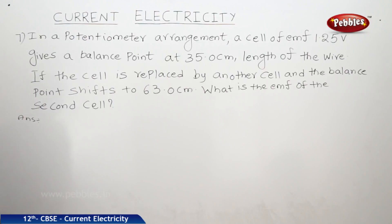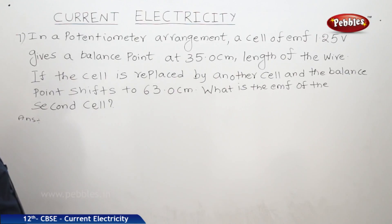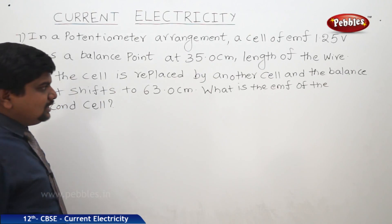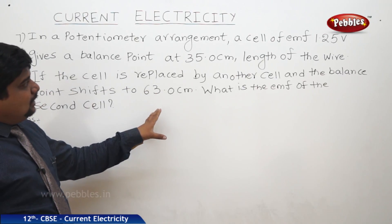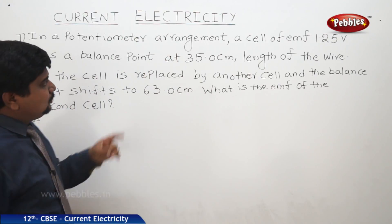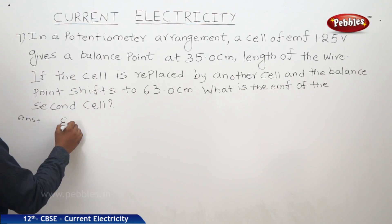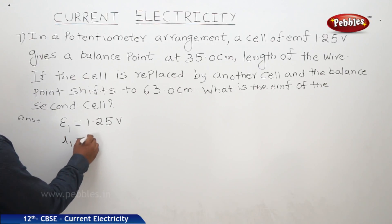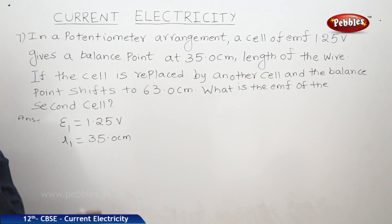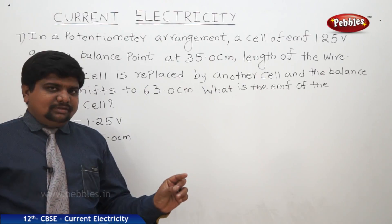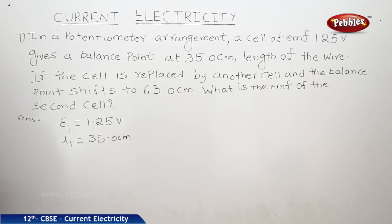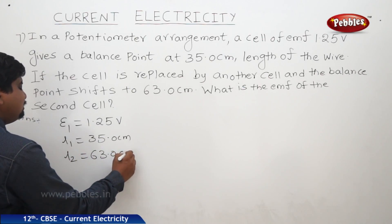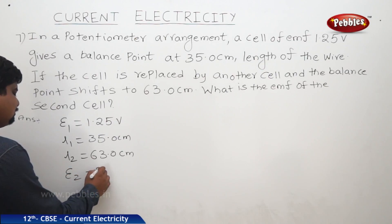Next, a potentiometer problem. A cell of EMF 1.25 volts gives a balance point at 35 centimeters length of the wire; so E1 equals 1.25 volts and L1 equals 35 centimeters. If the cell is replaced by another cell and the balance point shifts to 63 centimeters, then L2 becomes 63 centimeters. We need to find the EMF of the second cell, E2.